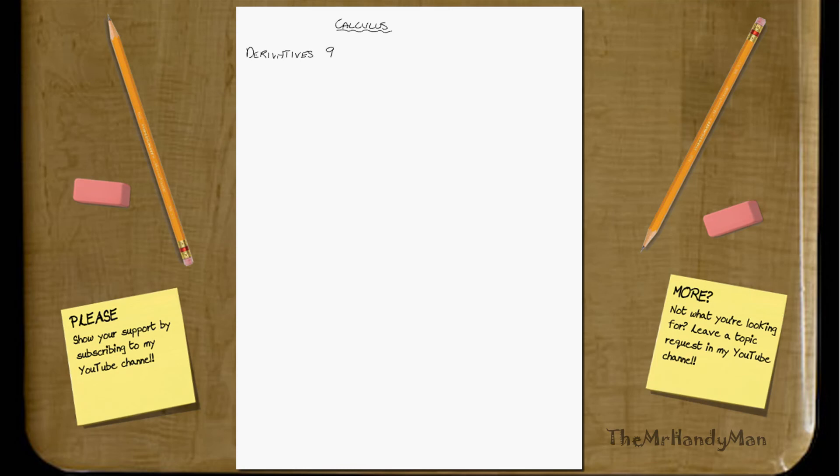Hi there, this is Derivatives 9, and in this video I'm going to be talking about higher forms of derivatives. The whole point of this is just to expose you to the fact that you can do a derivative once, then do it again, and do it again. You can almost just iterate the process of doing the derivatives.